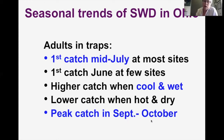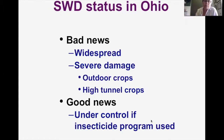So any of those really late-ripening fruits are at great risk. To summarize the status in Ohio: the bad news is it has become a very widespread problem, causing severe damage on both outdoor fruit crops as well as high tunnel fruit crops, mainly in the autumn. The good news, if any, is that most growers have actually done a very good job at getting this under control, but usually only if they're using a fairly aggressive insecticide program. People who hadn't been spraying these crops at all were just getting devastated.